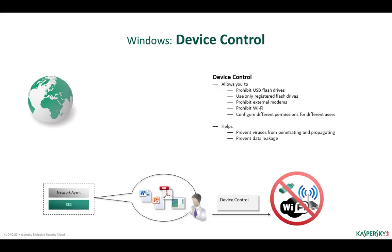Control components can be regarded as additional protection elements that decrease the attack surface on the computer. However, their main purpose is to limit employee actions, especially during business hours. In some control components you can configure schedules for limitations — for example, only from 9 a.m. to 6 p.m. and only on weekdays. Kaspersky Endpoint Security Cloud provides two controls: device control and web control.